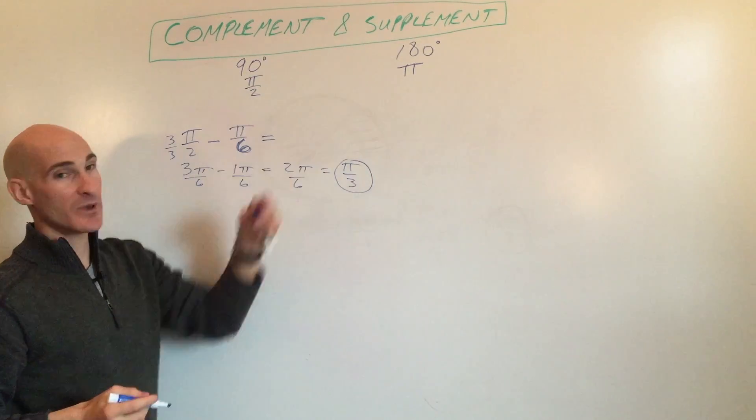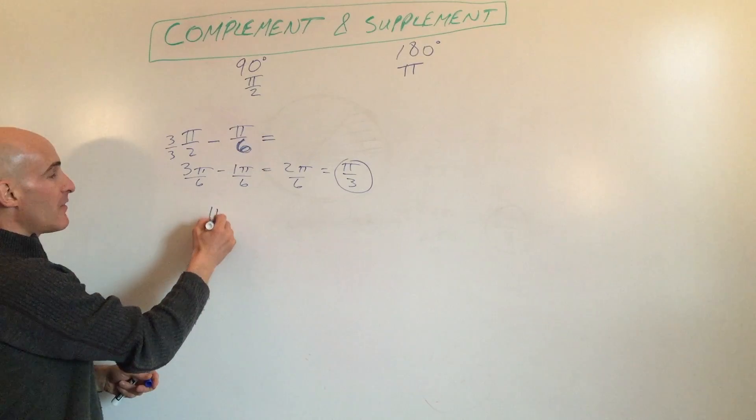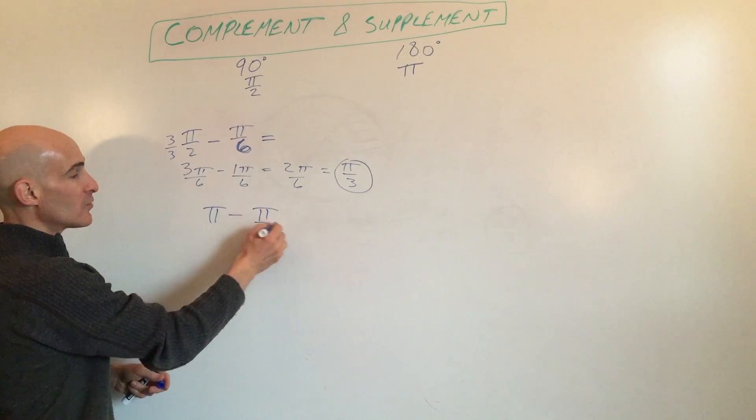Now, if you want to solve for the supplement, what you're going to do is take π minus the angle. π over 6 is the one we're working with.